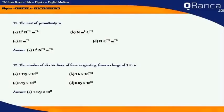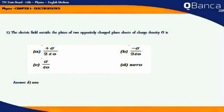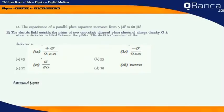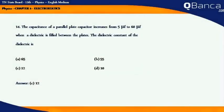The number of electric lines of force originating from a charge of 1 C is. Answer: 1.129 into 10 to the power 11. The electric field outside the plates of two oppositely charged plane sheets of charge density sigma is. Answer: 0.